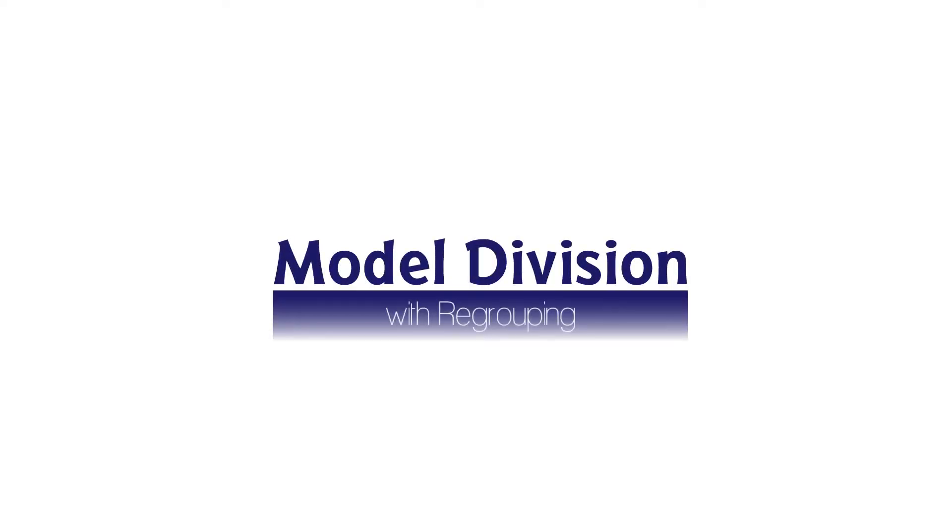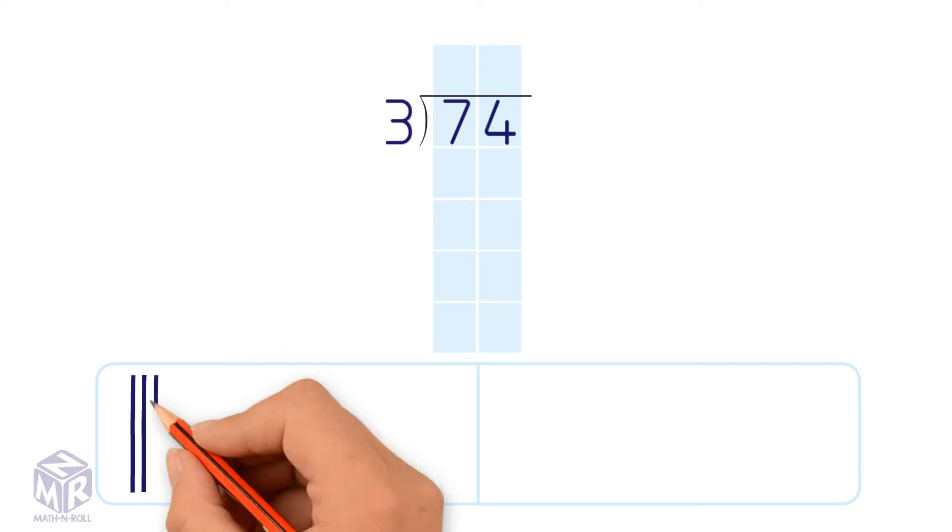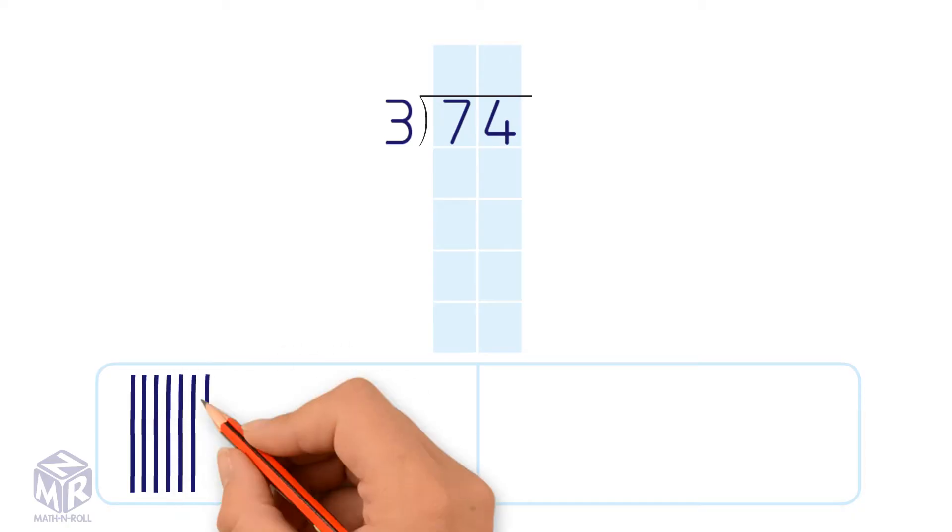Model division with regrouping. 74 divided by 3. Let's draw a quick picture to help us divide. Model 74 as 7 tens and 4 ones.